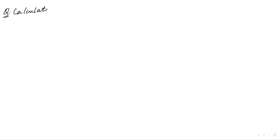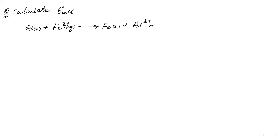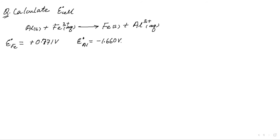Calculate E°cell for the reaction: Al(s) + Fe³⁺(aq) → Fe(s) + Al³⁺(aq). E°(Fe) is given as +0.771 V and E°(Al) is given as −1.660 V. Calculate the E°cell for this reaction.